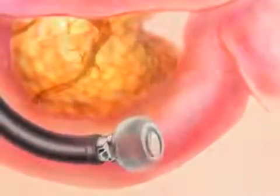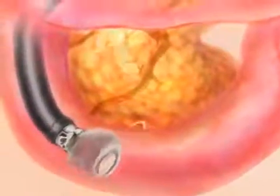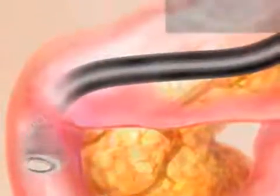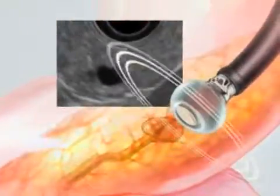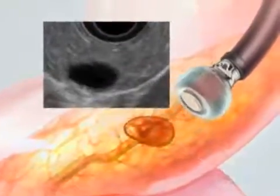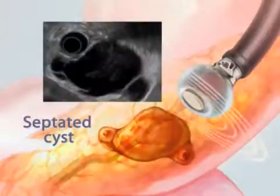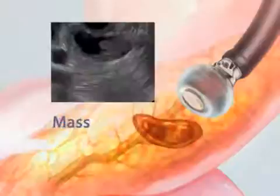These images allow your doctor to examine your pancreas and any pancreatic cysts in detail. Your doctor can then determine the location of the cyst, measure it, and identify the different types, such as simple cysts, septated cysts, nodules, or masses.